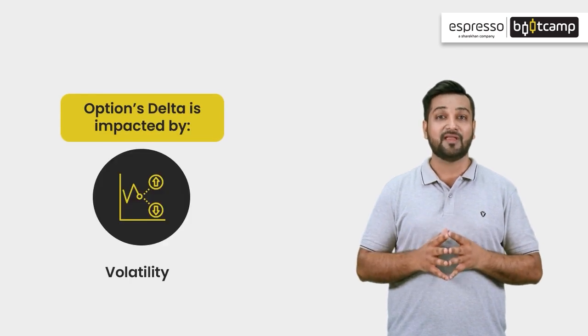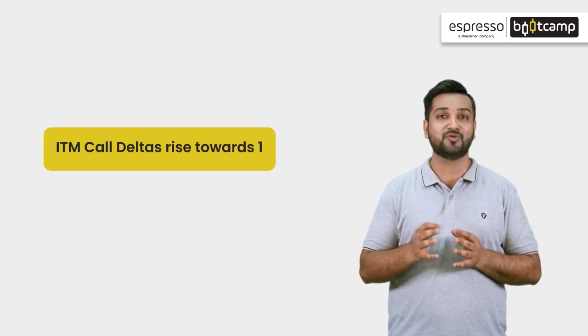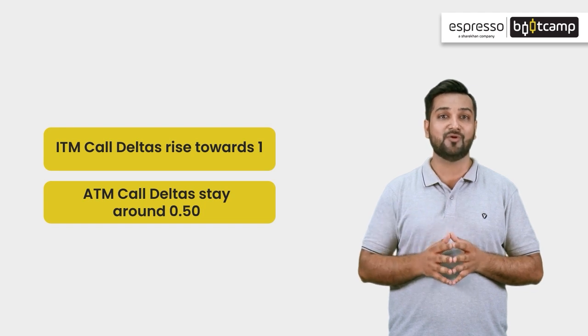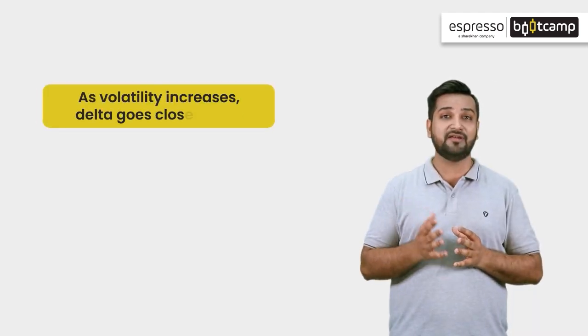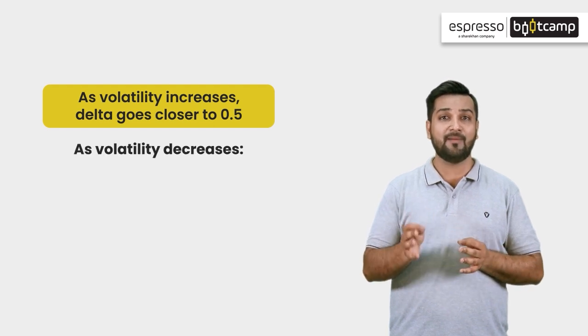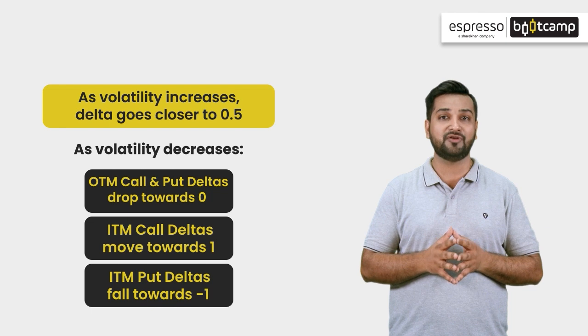Let's talk about expiry and volatility. Volatility and time to expiry affect an option's Delta. Near expiry, if all other things remain constant, the Delta value of in the money call options will go close to 1, the Delta value of at the money call options will go close to 0.5, and the Delta value of out of the money call options will go toward 0. As volatility increases, the Delta goes close to 0.5. When volatility falls, out of the money calls and puts move toward Delta 0, in the money calls toward Delta 1, and in the money puts toward Delta minus 1.